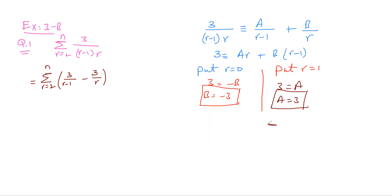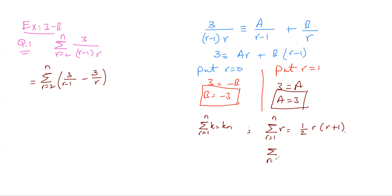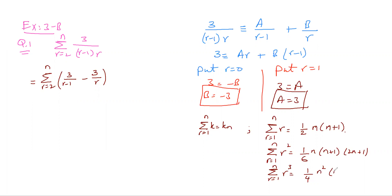You have seen formulas: the sum from r=1 to n of k equals k·n; the sum of r equals (1/2)·n·(n+1); the sum of r² equals (1/6)·n·(n+1)·(2n+1); and the sum of r³ equals (1/4)·n²·(n+1)². Since we have (r-1) and r in the denominator, we can use these formulas to find the sum.